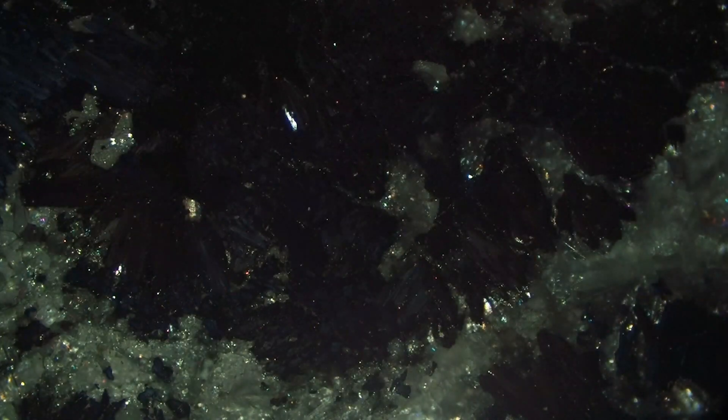Now we're going to do cross polars again and we can see again we have those kind of grays and dark blues, and as we rotate the stage they're changing. And this is an example again of anisotropy and it's a distinctive characteristic of arsenopyrite.